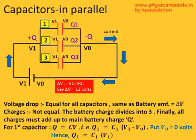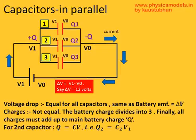For the first capacitor, the charge Q1 is generally equal to C times V, so Q1 equals C1 times (V1 minus V0). Since we set V0 equal to 0, Q1 equals C1 times V1. This is how you start deriving. For the second capacitor, Q2 again equals C2 times (V1 minus V0). Setting V0 to 0, Q2 equals C2 times V1.